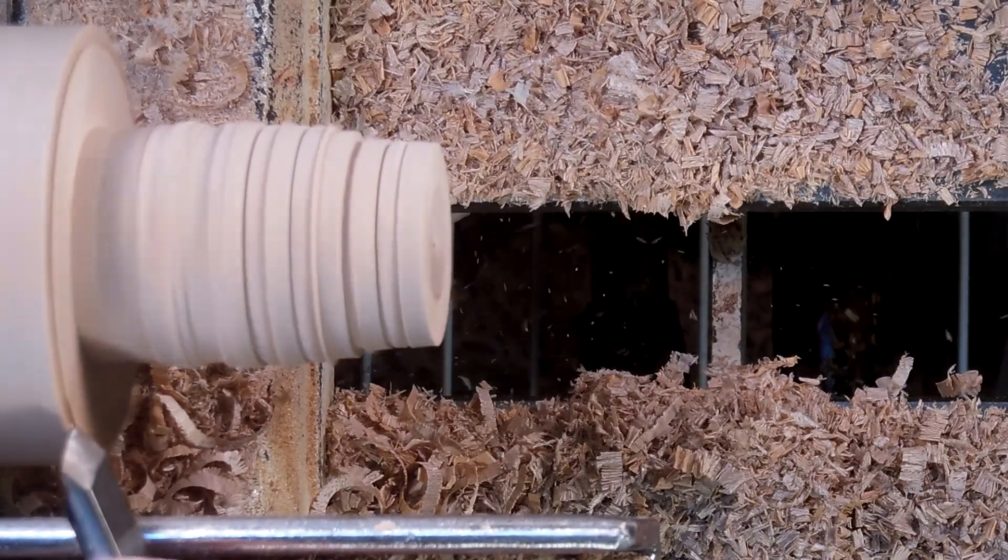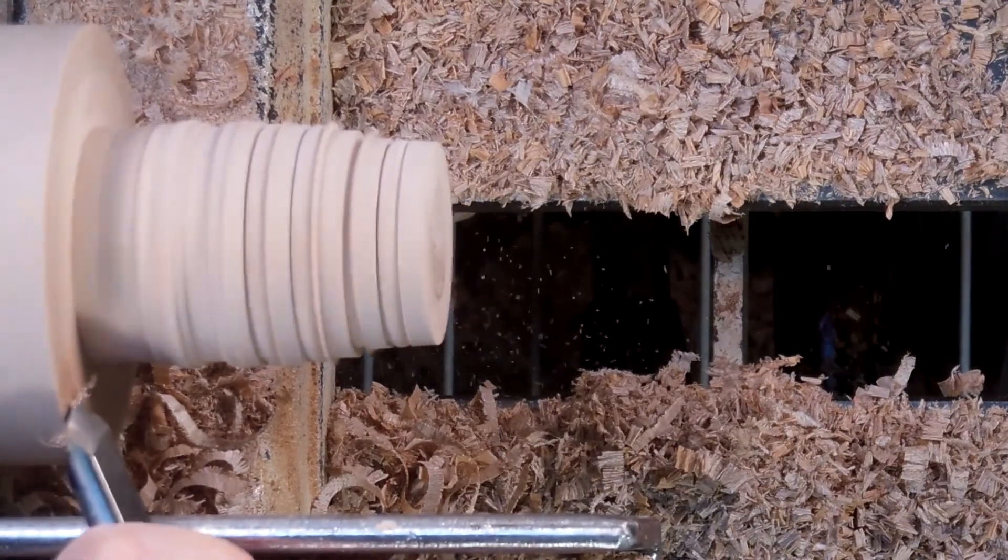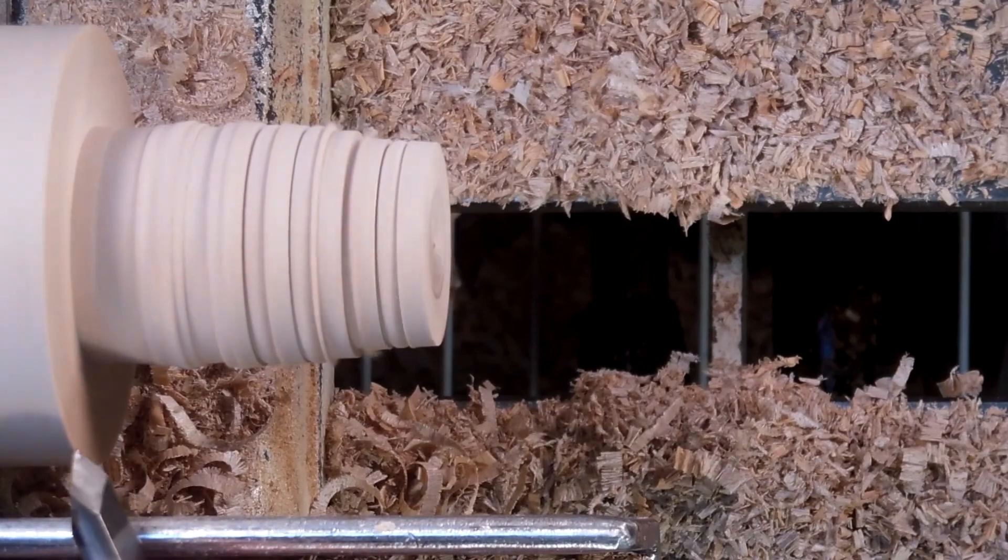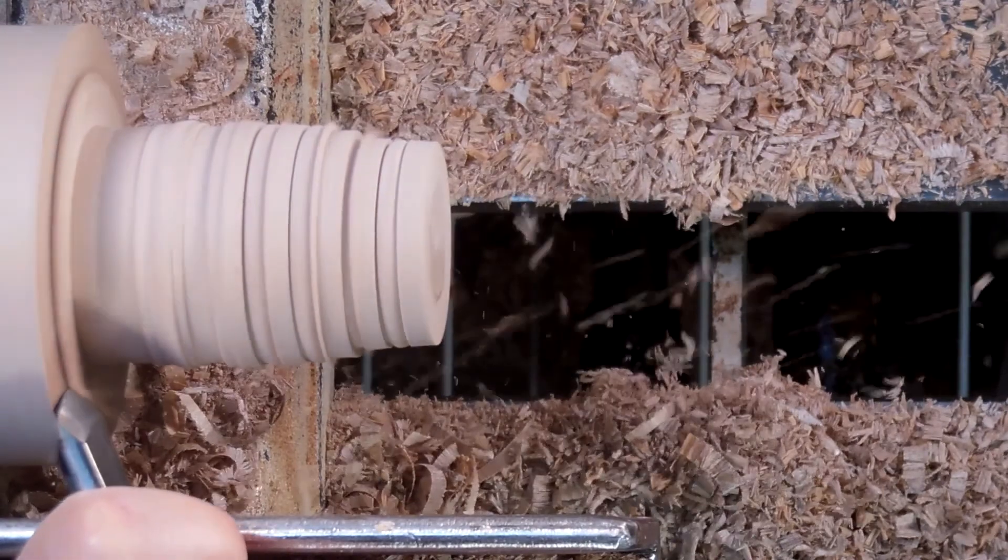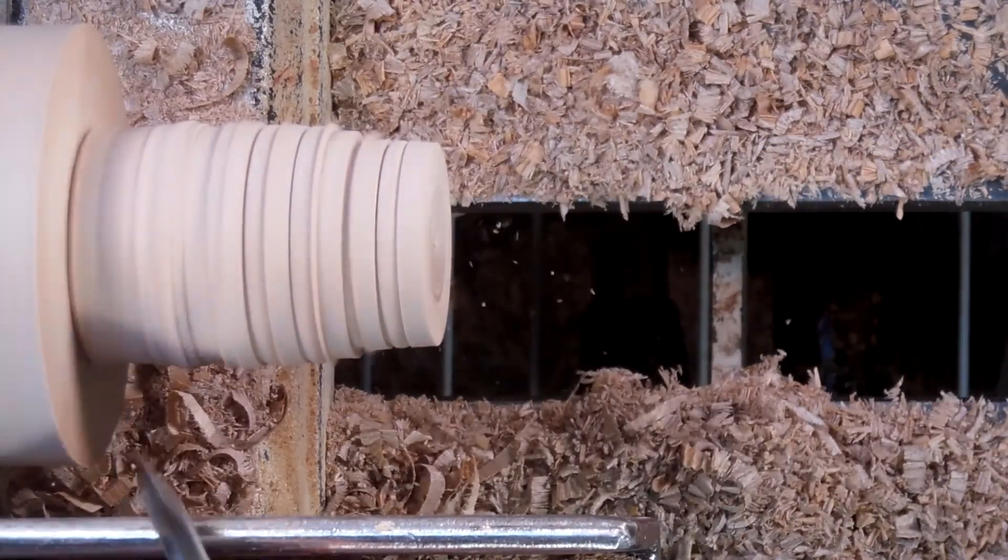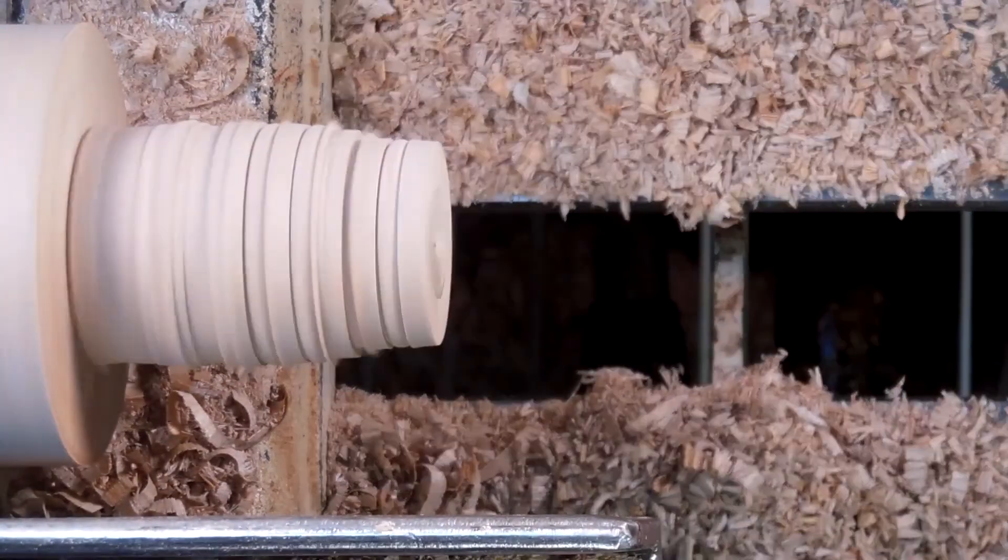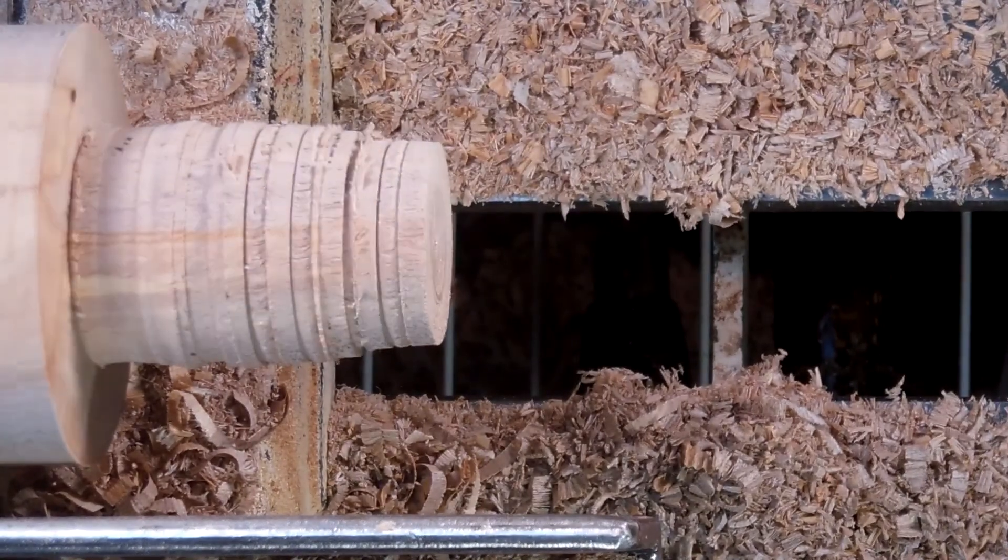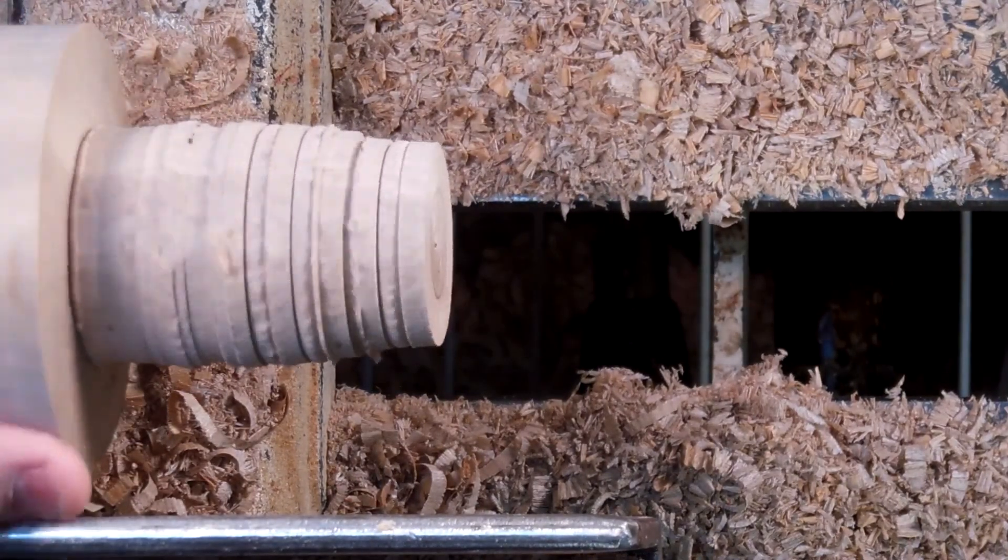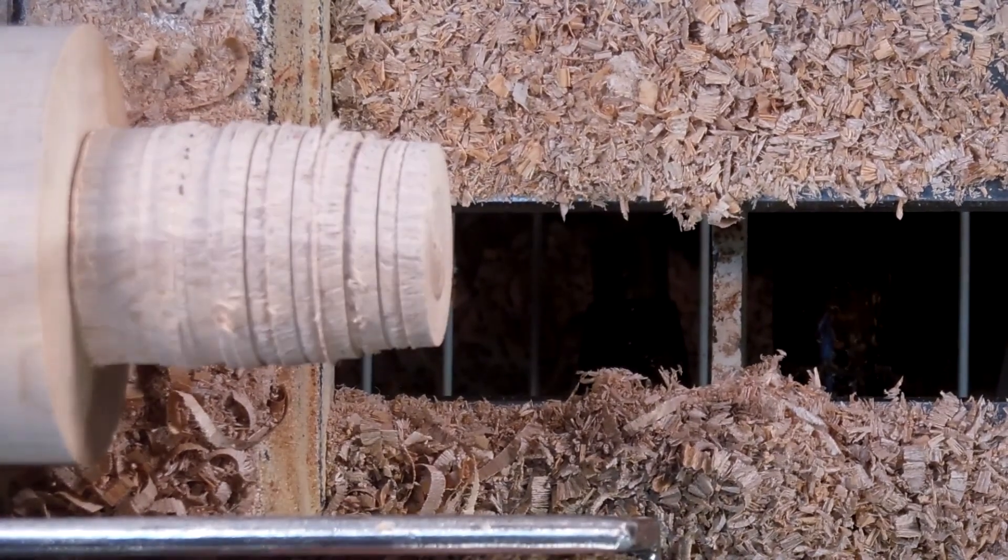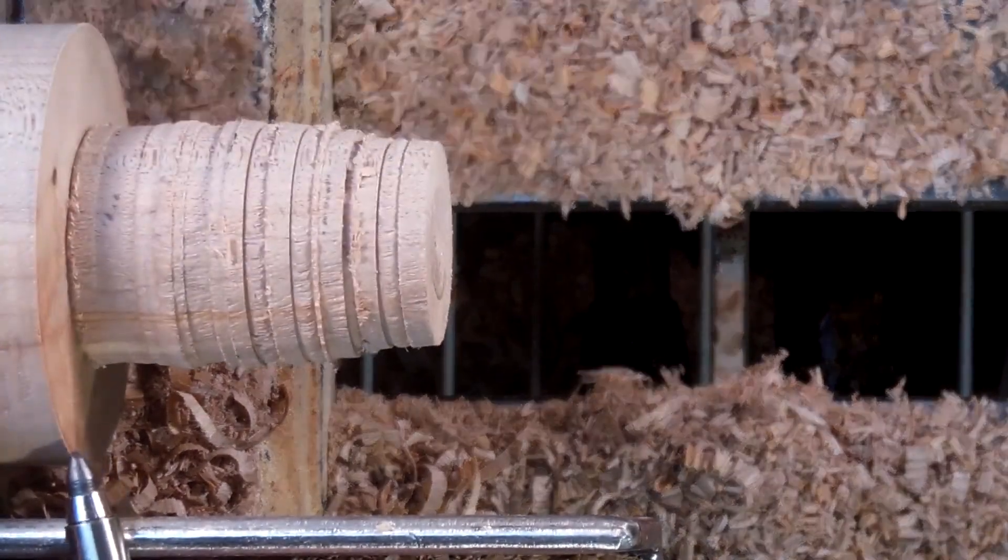My conclusions from these different tests is that the best surface is left by the paring cut with the skew chisel, with a spindle gouge coming at a very close second. The spindle gouge end grain cut, however, is easier to make and is faster than using the skew chisel. A paring cut with the skew chisel requires some practice to get it right, but I think it's probably worth the effort to learn. I hope this helps you in your turning.